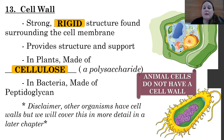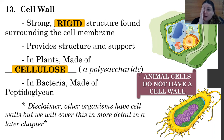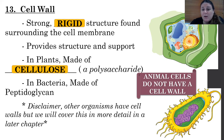In plants the cell wall is made out of cellulose. In bacteria it's made out of peptidoglycan. Fungi — like mushrooms — have a cell wall made out of a polysaccharide known as chitin. Some protists also have a cell wall. So bacteria, some protists, fungi with chitin, and plants with cellulose all have cell walls. Animals, however, do not have a cell wall — only a cell membrane.